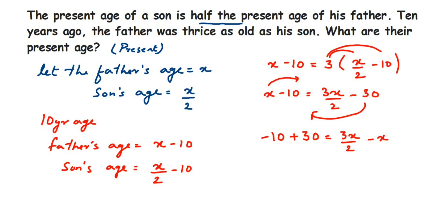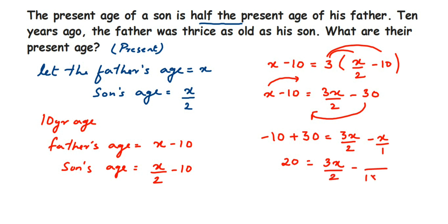So we have 20 = 3x/2 − x. Write x as x/1, then take LCM of 2 and 1, which is 2. So: 20 = 3x/2 − 2x/2. Since the denominators are now the same, subtract the numerators: 3x − 2x = x. So 20 = x/2.